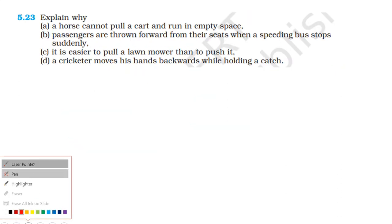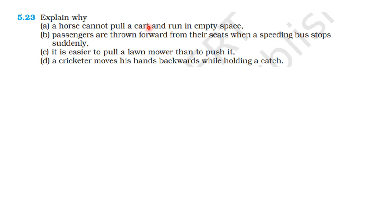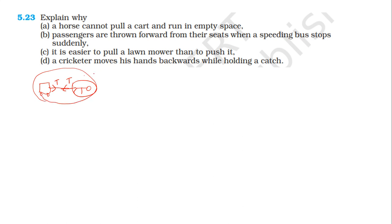Next question: explain why a horse cannot pull a cart and run in empty space. For every action there is an equal and opposite reaction. The horse and cart form a system — the internal forces are equal and opposite, so the total internal force on the system is zero.